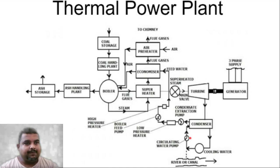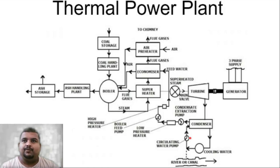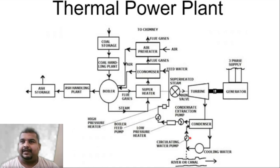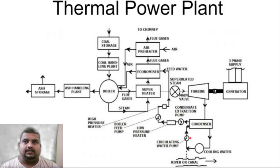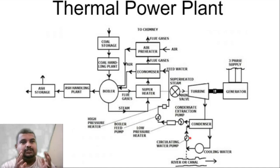The BFP — boiler feed water pump — increases the pressure of the boiler feed water considerably, to the highest pressure anywhere in the entire system. The highest pressure in the system is at the BFP outlet. From there, at high pressure, the water goes through the economizer — there is also an HP heater (high pressure heater) which further heats the water — and then through the economizer it is provided to the boiler. This entire path from condenser → CEP → LP heater → BFP → HP heater → economizer → boiler is called the feed water cycle.